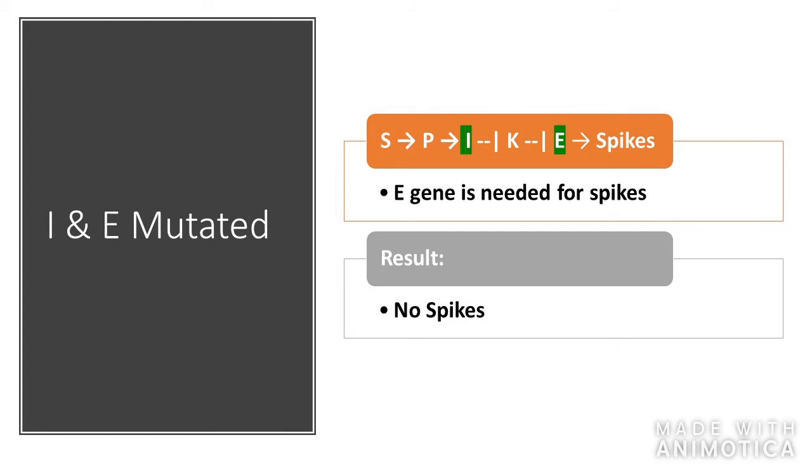For the I and E mutation, without I, K is activated, which would then inhibit E. But because E is also mutated and E is essential for producing the spikes, we see no spikes in that cell.